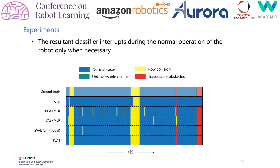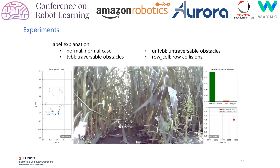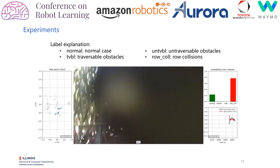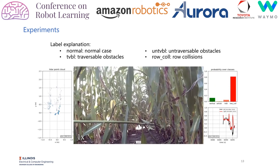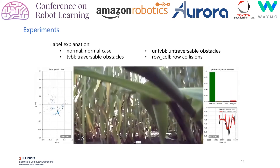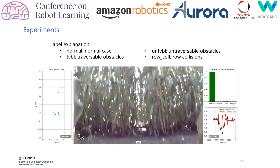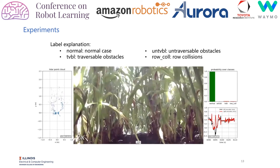We also analyzed the sensitivity to anomalies of the five models during our run. Our model exhibits robustness against sensor noise and interrupts the normal operation of the robot only when necessary. Here is a demo run of our algorithm on the test set. The video was taken by the front camera on the robot. The bar chart on the top right shows the output probability of the anomaly detector.